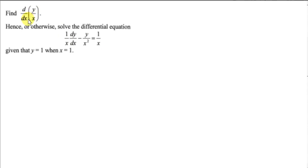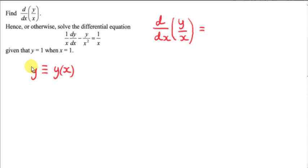That's given in the first part of this question, where we have to get the derivative with respect to x of y over x. Now y is the dependent variable — it's a function of x. It depends on the independent variable x. So when we differentiate y with respect to x, all we can do is write down dy/dx because we don't know what y is as a function of x. We are not given that information.